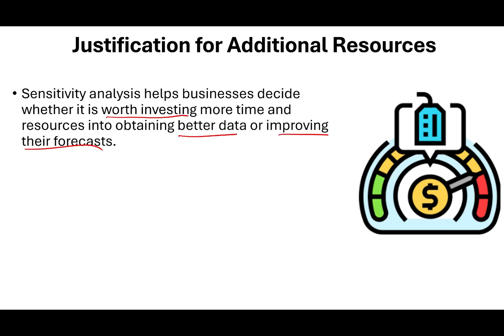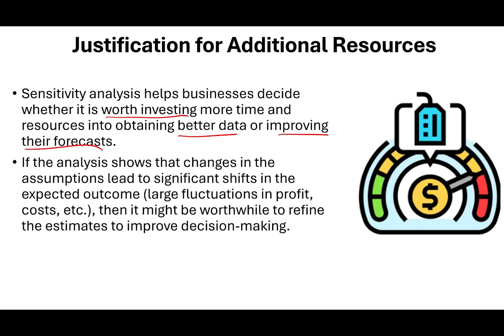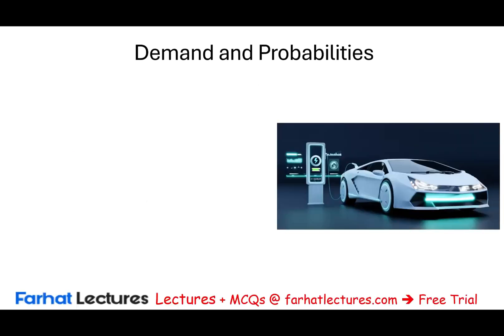If the analysis shows that changes in assumptions lead to significant shifts in expected outcomes — like large fluctuations in profit or cost — then it may be worthwhile to refine estimates to improve decision making. Simply put, if we see huge changes based on the sensitivity analysis, we allocate more resources, get more data, and try to improve our forecast. The best way to illustrate this is to work an example, starting with expected value as the baseline, then performing what-if analysis.